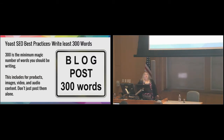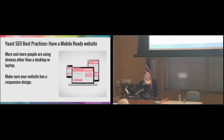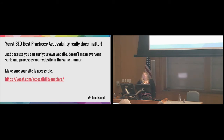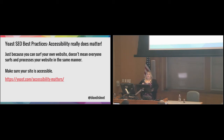Write at least 300 words — that is the minimum magic number you should be writing, and this includes for products, images, video, and audio content. Don't just post them alone. Have a mobile-ready, responsive website. Accessibility really does matter. Just because you can surf your own website doesn't mean everyone processes it the same way. Make sure your website is accessible. Really small gray text is a problem — there are a lot of legally blind people in this world. One out of five of your visitors may have an accessibility issue. My best friend is 35 and legally blind — she can't see gray text.